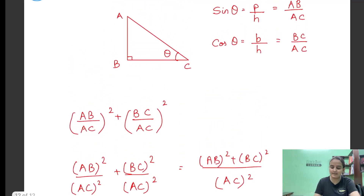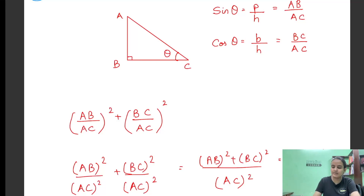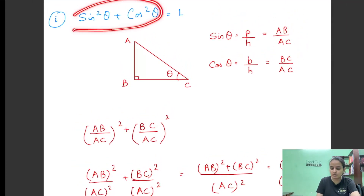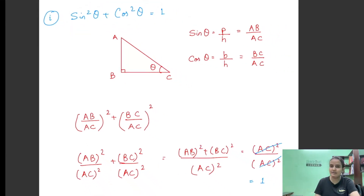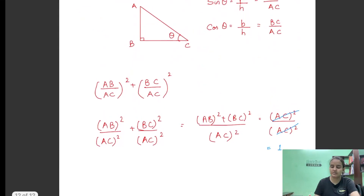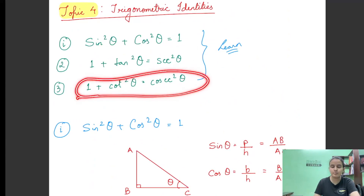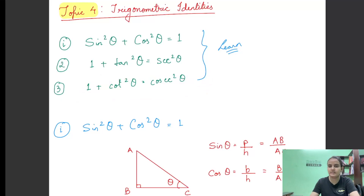अब अगर हम अच्छे से देखेंगे, तो यह एक right angle triangle है, जिसमें हम Pythagoras theorem easily apply कर सकते हैं। तो AB² + BC² को अगर हम add करें, तो it will be nothing but AC². So we can write AC²/AC² = 1। तो देखो, यही तो हमें लाना था — sin²θ + cos²θ = 1। Similarly, हम same concept use करके second identity (1 + tan²θ = sec²θ) और third identity (1 + cot²θ = cosec²θ) भी prove कर सकते हैं, using the concept of right-angled triangle and Pythagoras theorem।